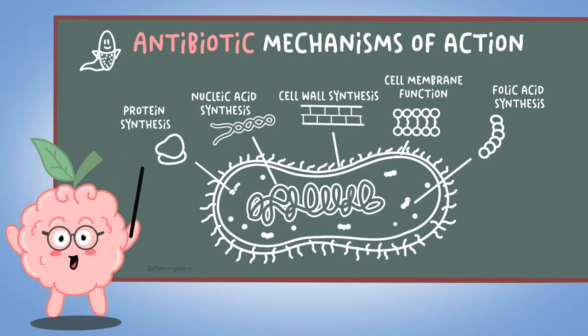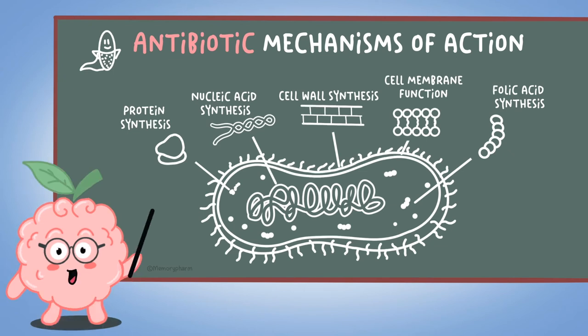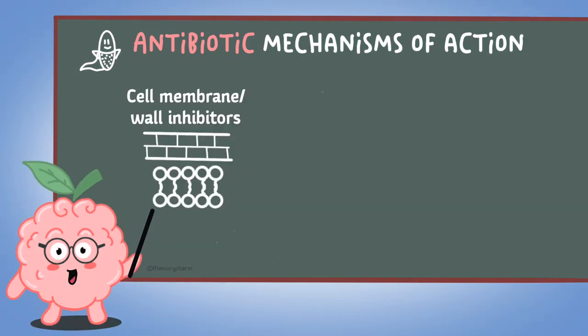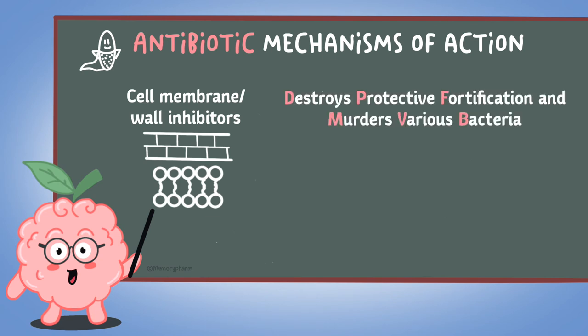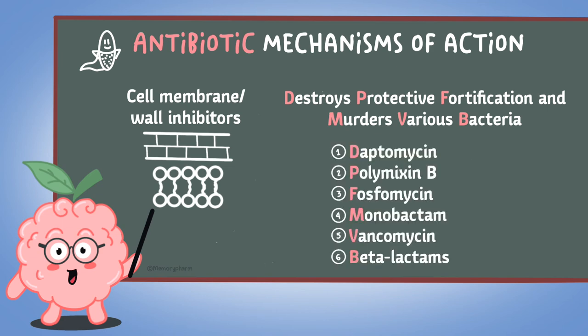To wrap it up, let's review some quick mnemonics on how to remember the mechanism of action of some of the antibiotic classes discussed. For cell membrane and cell wall inhibitors, remember the mnemonic 'destroys protective fortification and murders various bacteria.' The first two antibiotics in the mnemonic disrupt the bacteria cell membrane and the rest work on the bacteria cell wall: daptomycin, polymyxin B, phosphomycin, monobactam, vancomycin, and beta-lactams.